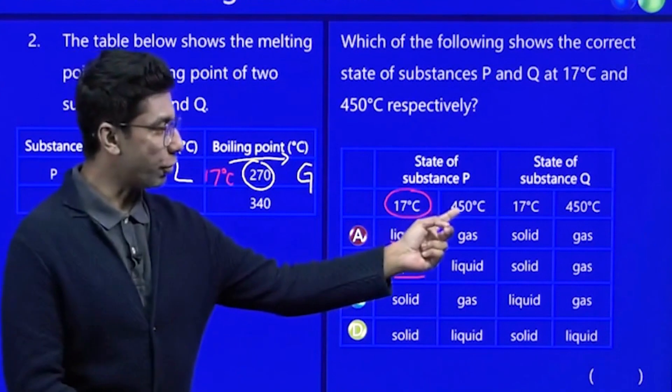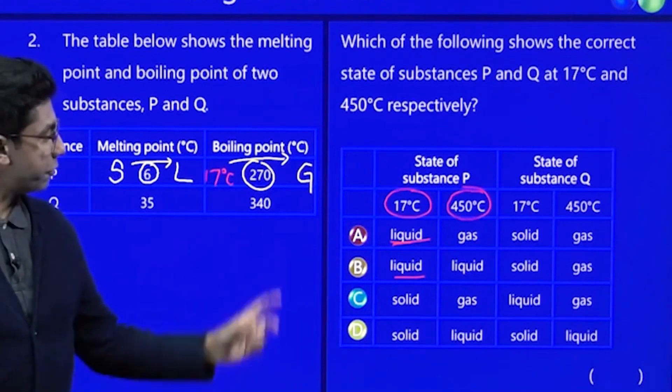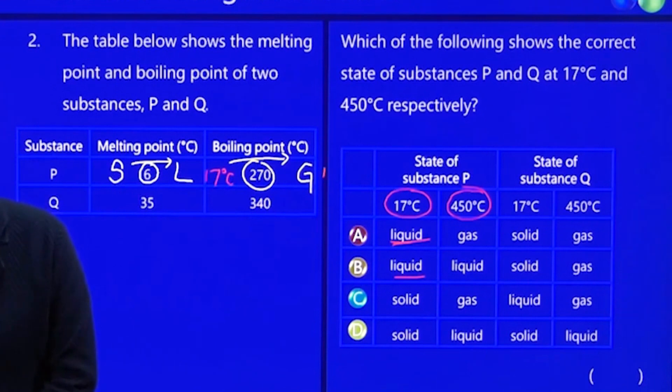Then you look at the next temperature, 450. And which zone is it in? 450, is it here? Here or here? There you go. 450 is in the gas zone. So at 450, he will be a gas and gas.